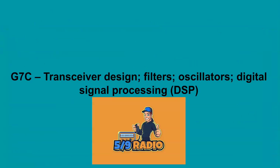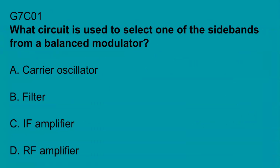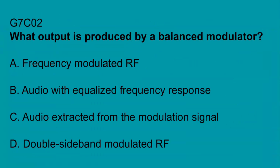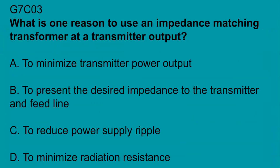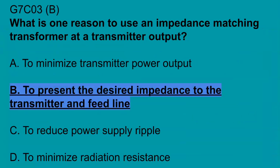G7C, transceiver design, filters, oscillators, digital signal processing. G7C01, what circuit is used to select one of the sidebands from a balanced modulator? Filter. G7C02, what output is produced by a balanced modulator? Double sideband modulated RF. G7C03, what is one reason to use an impedance matching transformer at a transmitter output? To present the desired impedance to the transmitter and feed line.